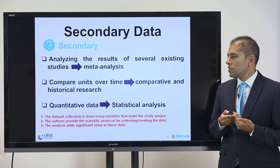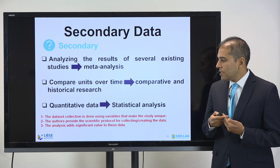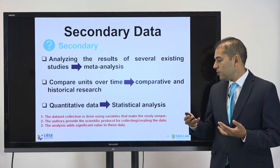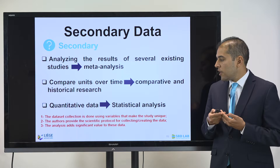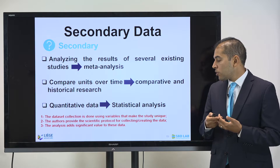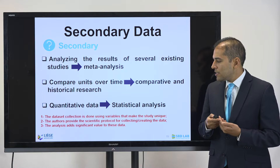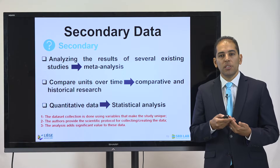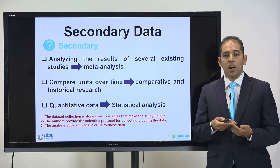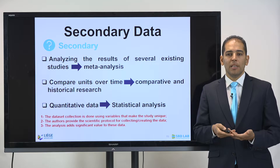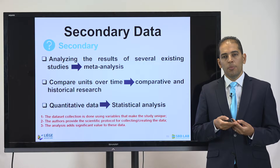One of the important criteria when selecting secondary data as a source is that the data set collection needs to be done using variables that make the study unique. We also need to make sure that the authors provide the scientific protocol for collecting and creating the data set, and that the analysis adds significant value to these data. Those are the main criteria that make somebody select a secondary data set in order to perform their study.